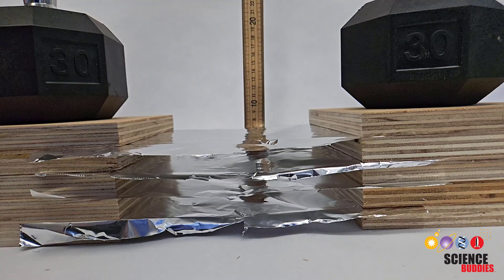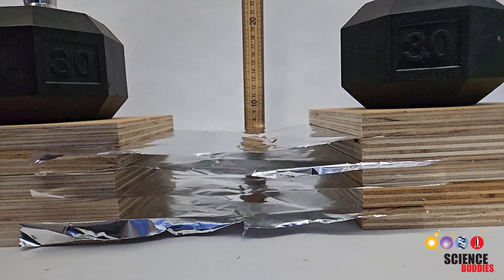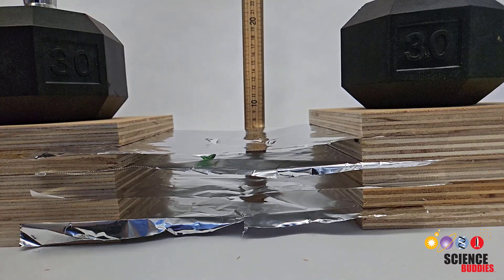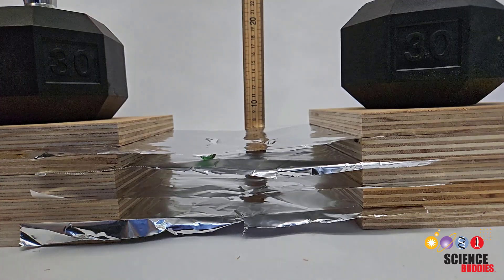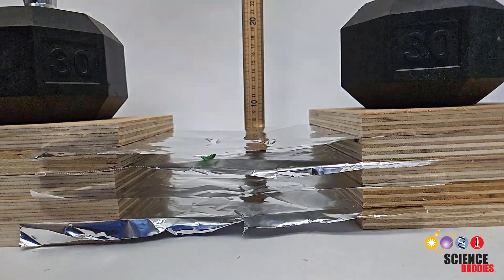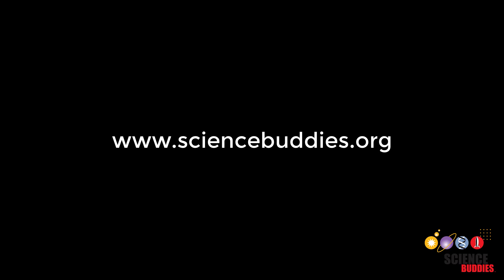There are many other variables you could test, like the spacing between layers of the shield, their length and width, the material you use, and the type of object you drop, its size, or shape. For over a thousand other projects in all areas of science and engineering, visit our website www.sciencebuddies.org.